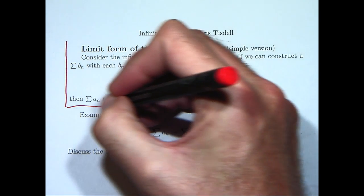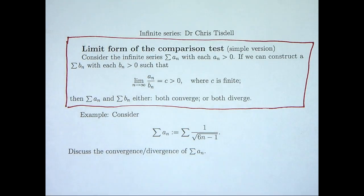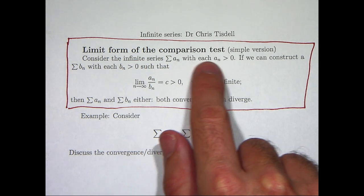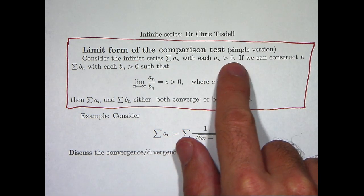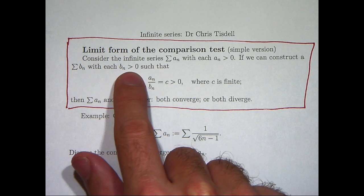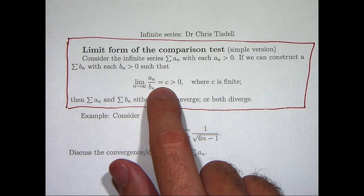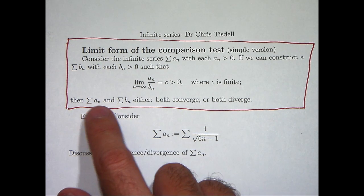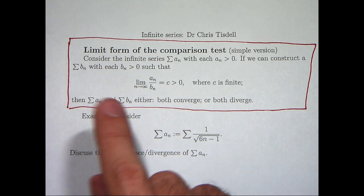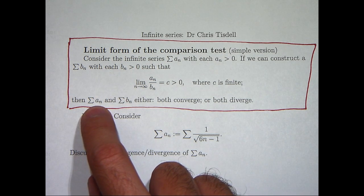So here's our main theorem. Consider an infinite series Σaₙ where each of the aₙ's are positive. If we can construct a new series Σbₙ with each bₙ positive, such that the limit of the ratio aₙ/bₙ is a positive finite value, then both series either converge or both diverge. In other words, whatever this new constructed series does, the original series will also do the same.